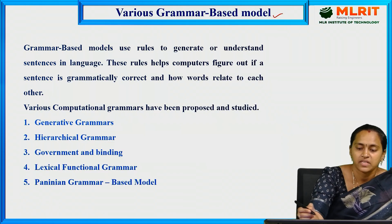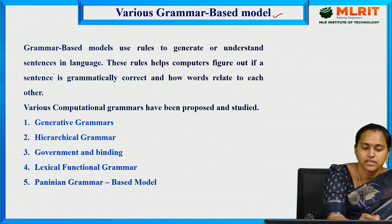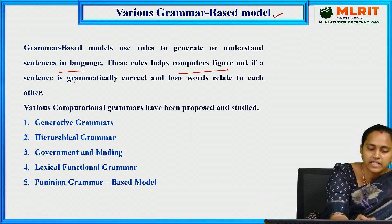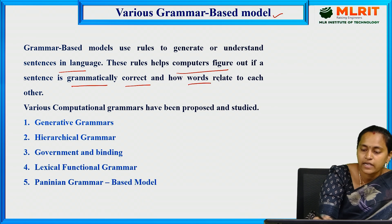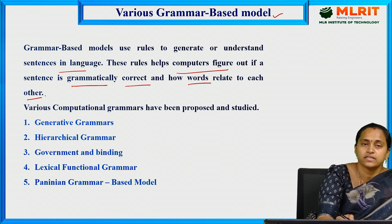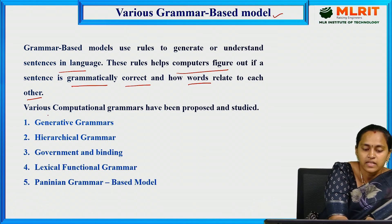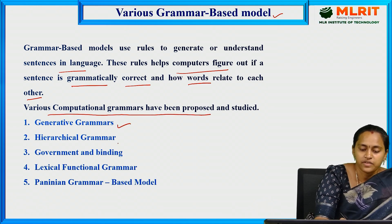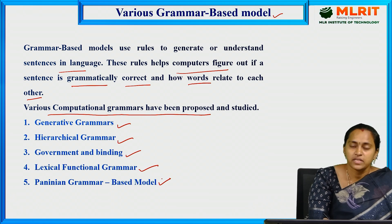Grammar-based models use rules to generate and understand sentences in a language. These rules help computers figure out if a sentence is grammatically correct and how words relate to each other — for example, 'She is reading a book.' Various grammar-based models include generative grammar, hierarchical grammar, government and binding grammar, lexical functional grammar, and Panini grammar-based model.